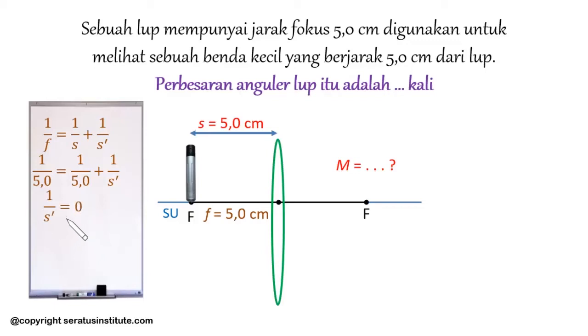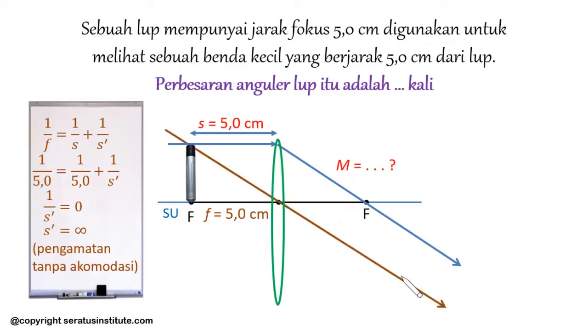So we get 1/s' equals 0. If 1/s' equals 0, then what is s'? s' is infinity. If s' is at infinity, what is the conclusion? The conclusion is that observation occurs without accommodation. If we draw the special rays, here is a ray coming parallel to the principal axis refracted through the focal point, and a ray passing through the optical center of the lens will continue straight. This is the illustration. So, the image is at infinity.